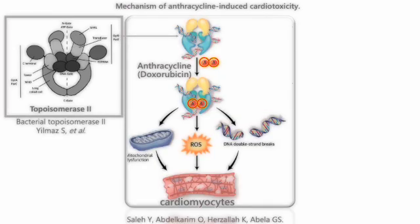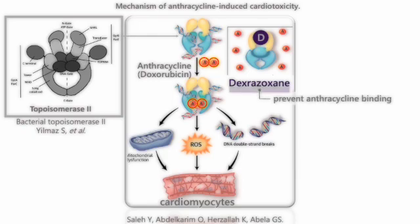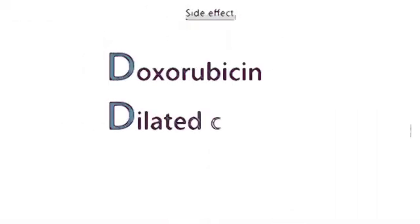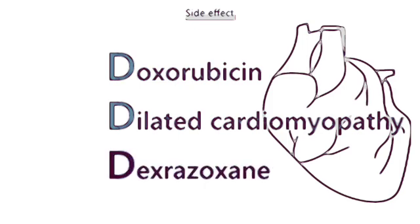In the inset, dexrazoxane was shown to bind to topoisomerase-2 beta to prevent anthracycline binding. Doxorubicin causes dilated cardiomyopathy, and dexrazoxane is used to prevent it.